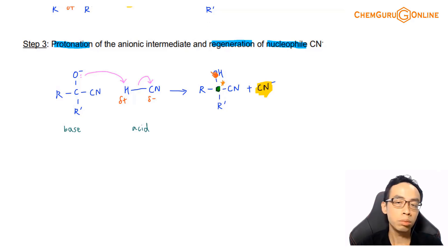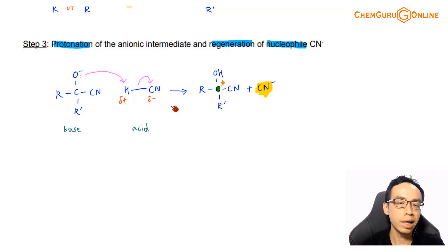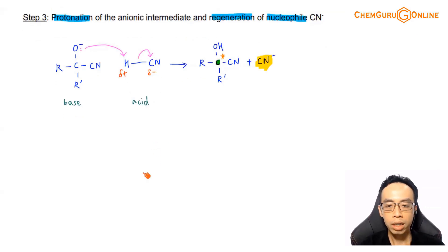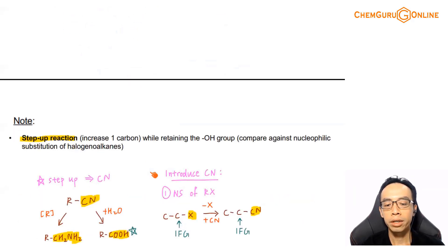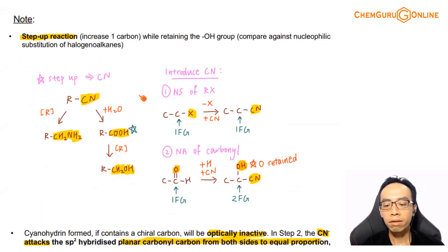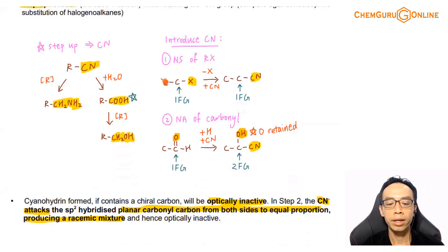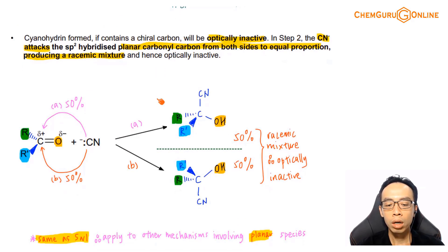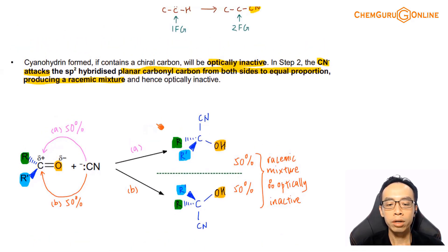Usually we think that if a carbon is chiral, it should be optically active and able to rotate plane polarized light. But there is one scenario where even if I have a chiral carbon, it is optically inactive — that is when I have a racemic mixture.